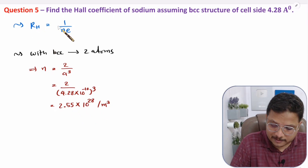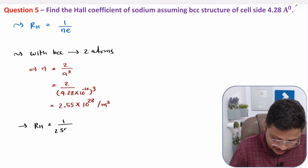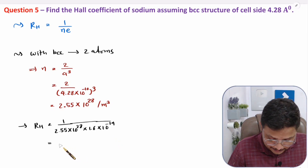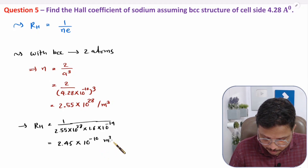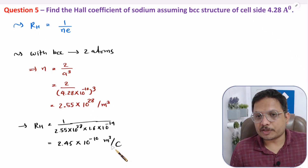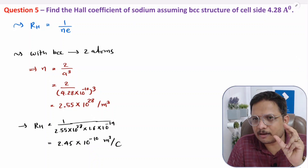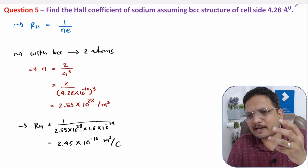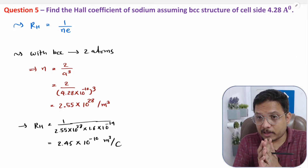Now substituting into Rₕ = 1/(n·e): n = 2.55 × 10²⁸ and e = 1.6 × 10⁻¹⁹. Solving gives Rₕ = 2.45 × 10⁻¹⁰ m³/C. Understanding terms like BCC cell side structure is important — such tricks in questions shouldn't stop you. I hope you understood everything; please note any questions in the comment section. Thank you for watching.